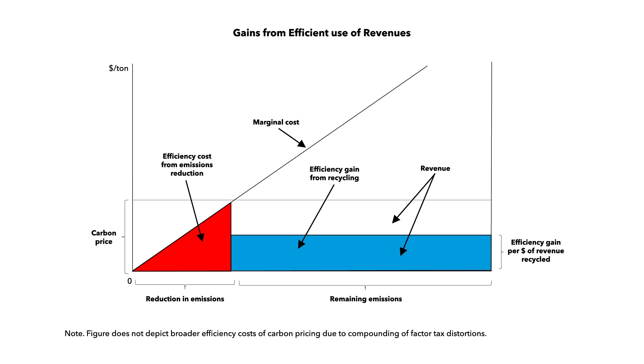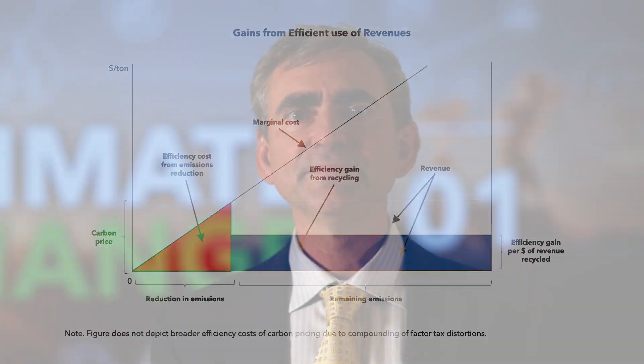This is the blue rectangle — the revenue raised times the efficiency gain per dollar of revenue recycled. This efficiency gain can be large relative to the efficiency cost of cutting emissions, the red triangle under the marginal abatement cost schedule. If instead revenues are given away in lump sum transfers, this efficiency gain is foregone. There are broader efficiency costs to carbon pricing not shown in this figure, due to their impact on contracting overall economic activity, which in turn compounds the efficiency costs of pre-existing factor tax distortions. We can also conduct incidence analysis for other mitigation instruments like feebates and regulations, which have a much smaller impact on energy prices than carbon pricing, but there is no counteracting benefit from revenue recycling.